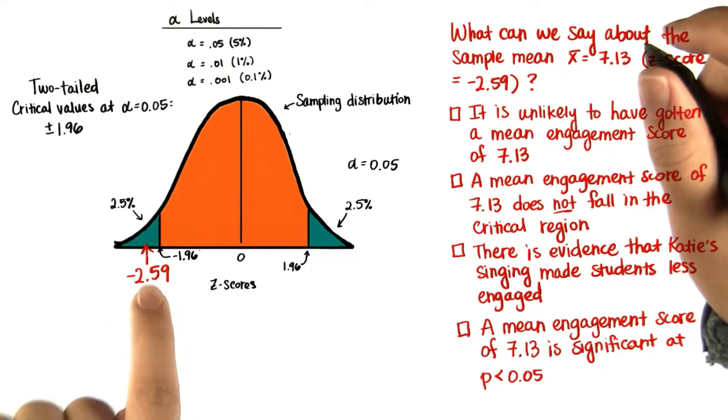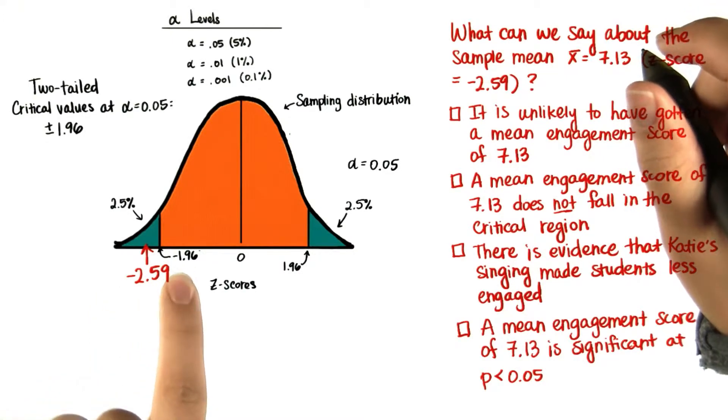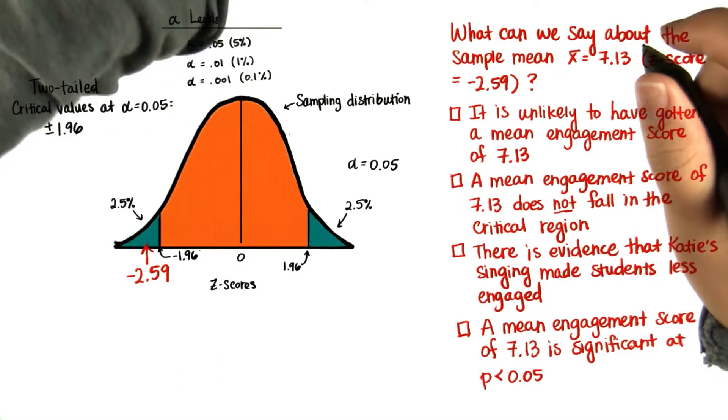Well, you can see that negative 2.59 is less than the Z critical value negative 1.96 at the alpha level of 0.05.